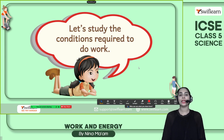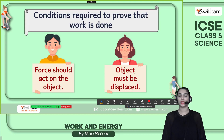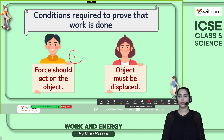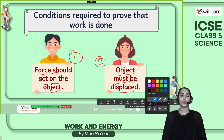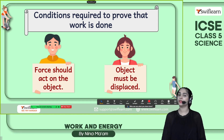Let's study the conditions required to do work. There are mainly two conditions: first, a force must act on the object; second, the object must be displaced. There should be a proper displacement or movement in the position of the object after the force is applied — only then can we consider it as work done.